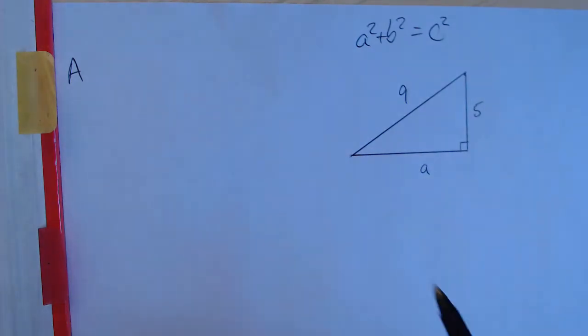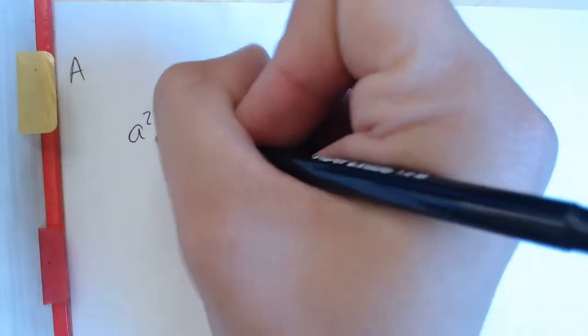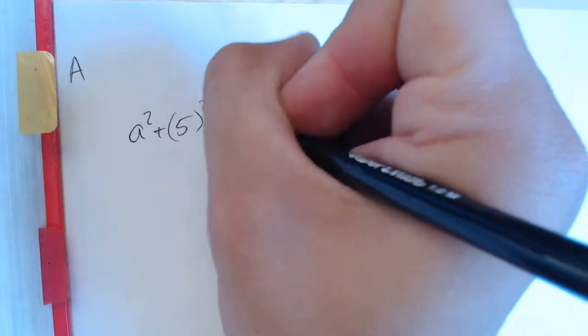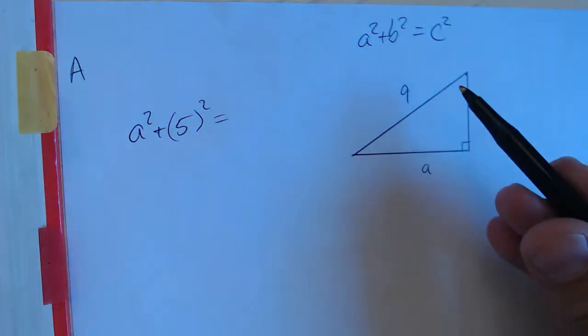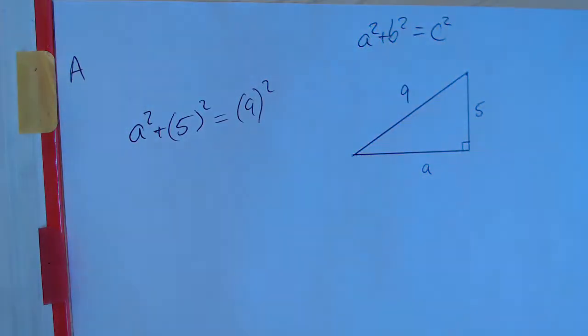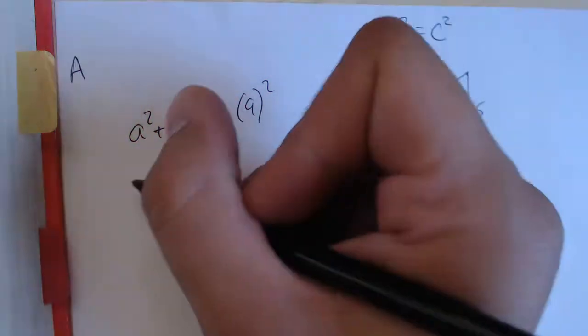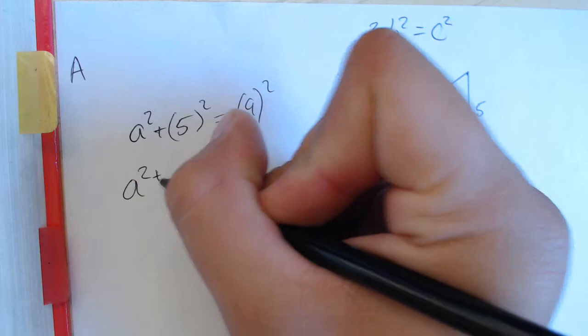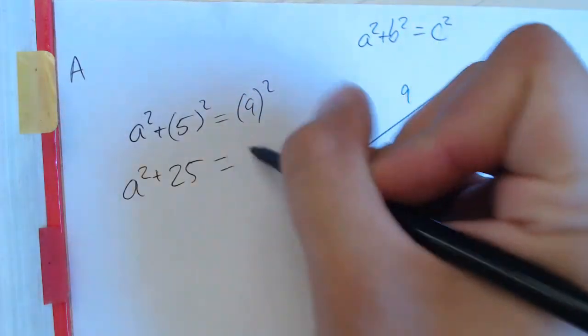So when we plug this information in, we've got A squared is unknown, B squared is 5, and that's going to equal C squared, which is 9. So to solve this equation, we've got A squared plus 25 equals 81.